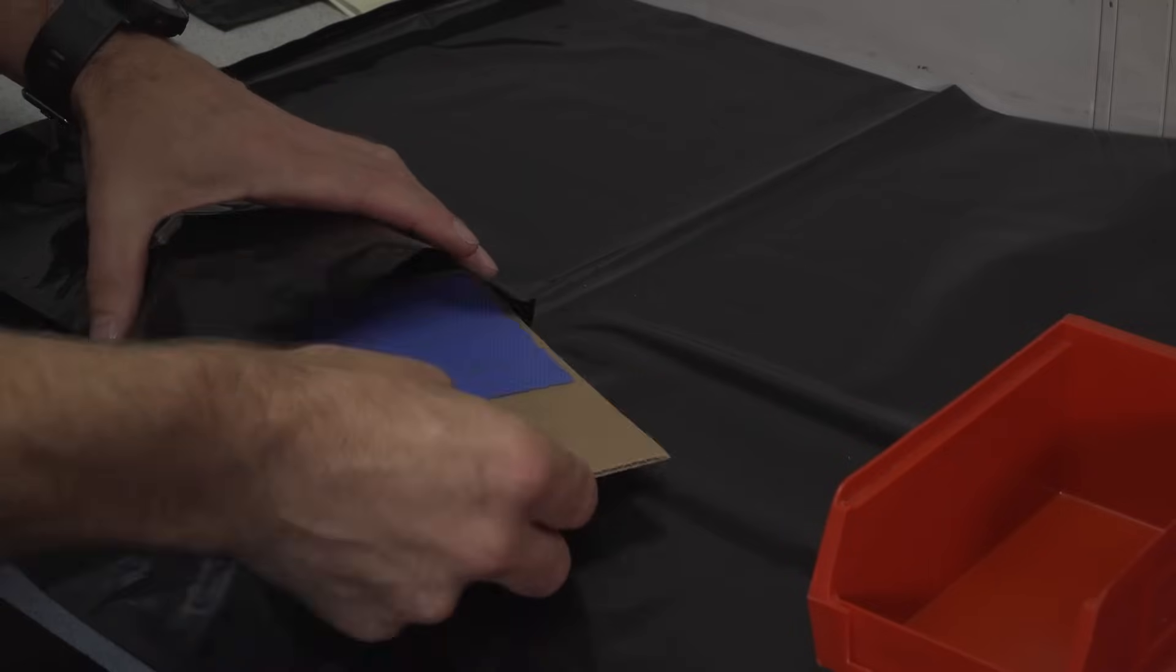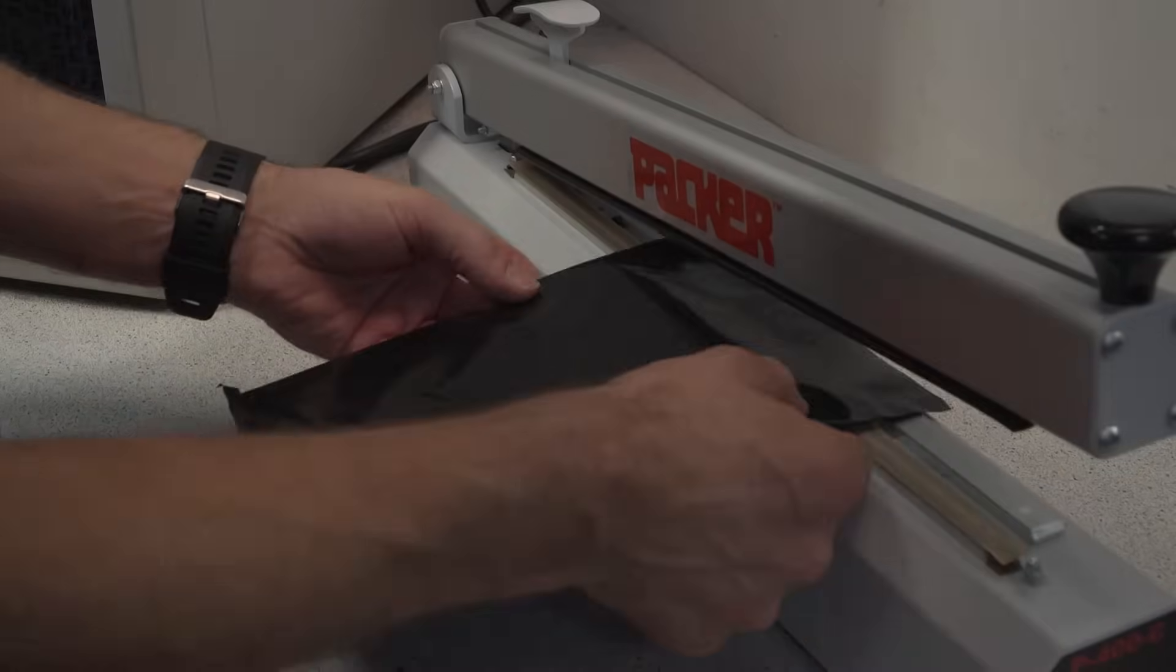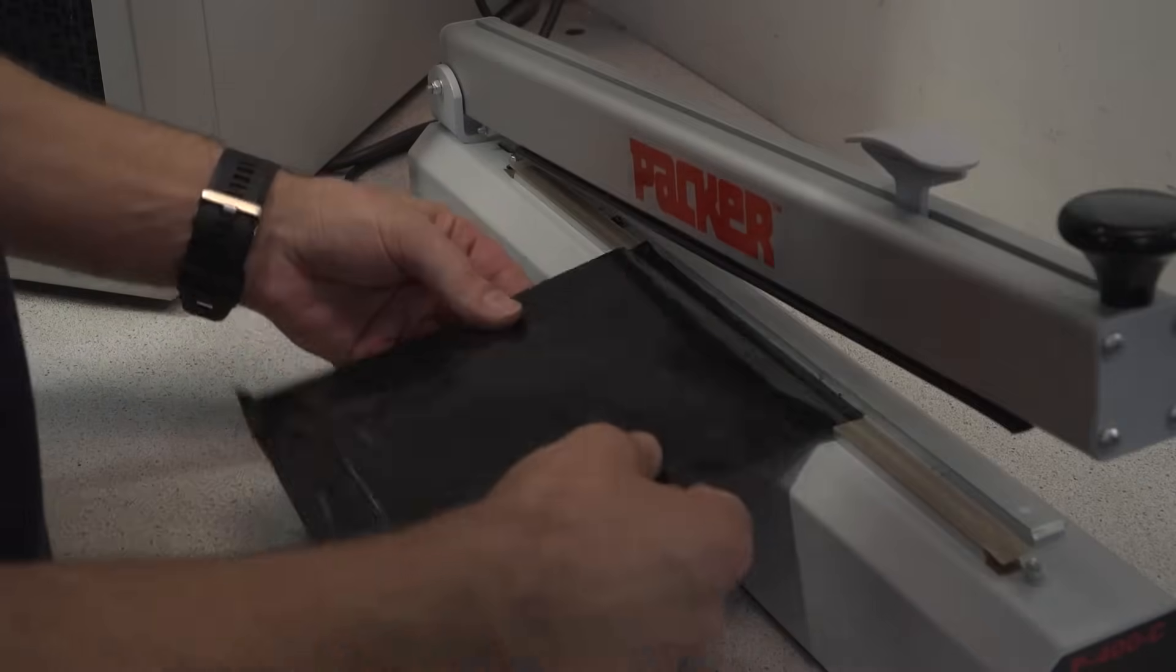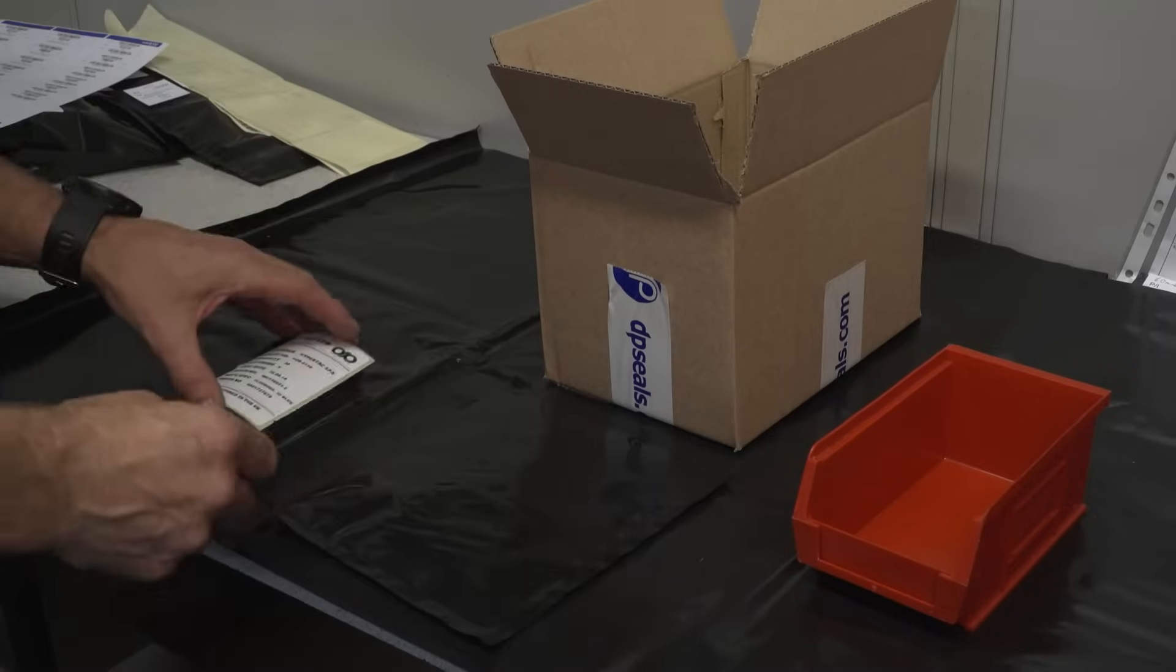With inspection complete, the seals are packed in accordance with the customer specification and labelled with the relevant batch information, ensuring total traceability from start to finish.